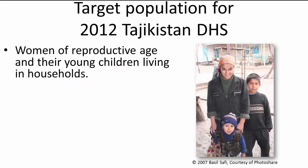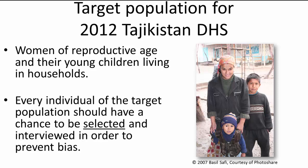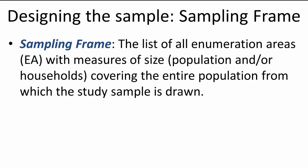In the 2012 Tajikistan DHS, the target population is women of reproductive age and their young children living in households. Depending on the country, sometimes the survey's target population includes women and men of reproductive age as well as their children. To ensure the survey is representative of the national target population, every individual in the target population should have a chance of being selected and interviewed in order to prevent bias. For a survey sample to represent the entire target population, there must be an accurate sampling frame to draw the sample from. A sampling frame is a list of all areas in a country as well as the population of each of these areas.